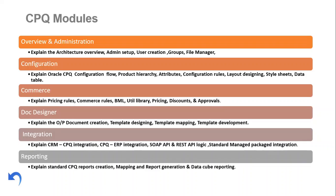Next is the Commerce module. The Commerce module covers how pricing logics can be implemented, how approval logics can be implemented, and how discounting procedures can be implemented in the system. CPQ has three different modules: Configure, Price, and Quote. Configuration covers the Configure part, Commerce covers the Price part, and the Quote part is handled using the Document Designer.